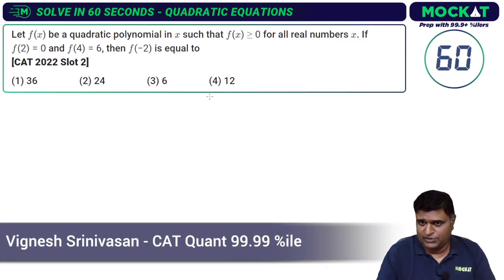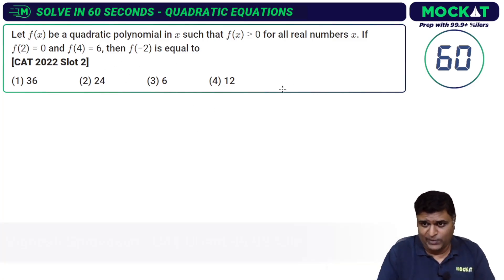Another question from CAT 2022 Slot 2, which I actually did very quickly. This was from my paper. Let's do this. Let f of x be a quadratic polynomial in x such that f of x is greater than or equal to 0. It's never negative for all real numbers x.